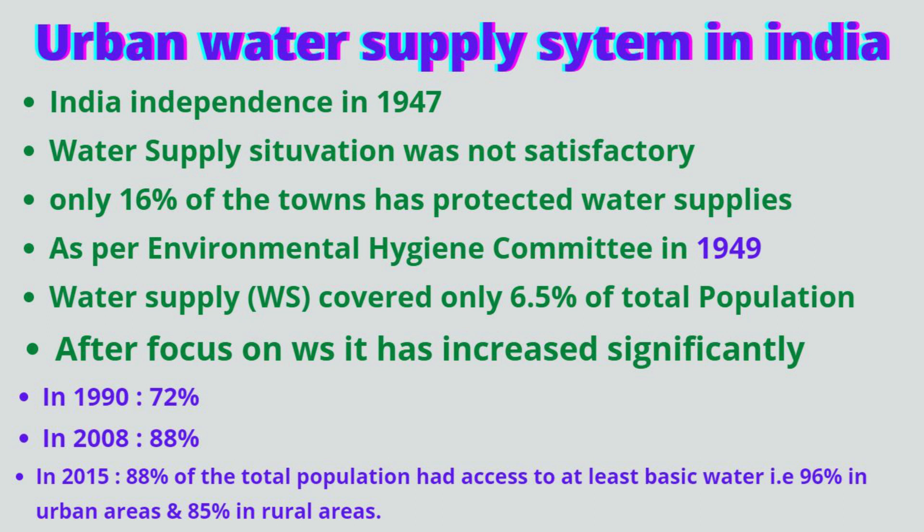Just after independence in 1947, the water supply situation in India was not satisfactory. Only 16% of the towns in India had protected water supplies. An Environmental Hygiene Committee in 1957 reported this, covering around 6.1% of the total population and 48.5% of the then urban population. Since then, the focus shifted to improving the water supply system in the country.